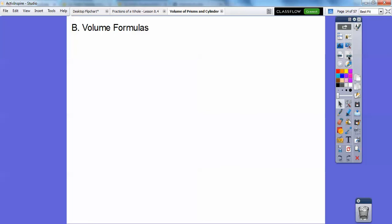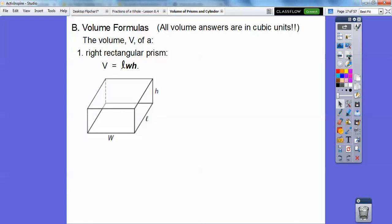So volume formulas. All volumes are in cubic units, so if we have inches, it would be inches cubed, or inches to the third power, or centimeters or meters to the third power. So the volume of right rectangular prism, this is the easiest one, is just length times width times height. This number times this number times this number. It doesn't matter which order when you multiply.